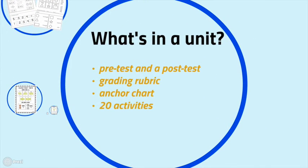So there are 8 different units. In each unit, there's a pre-test and a post-test, a grading rubric, an anchor chart, and 20 different activities. So the 8 different units plus the anchor chart plus the review unit has 20 activities in each. Ideally, you could do 1 unit a month and this curriculum would last the entire year, which is amazing.